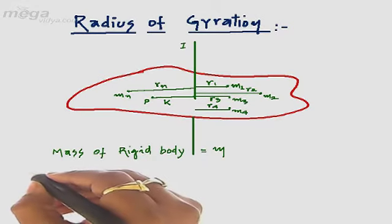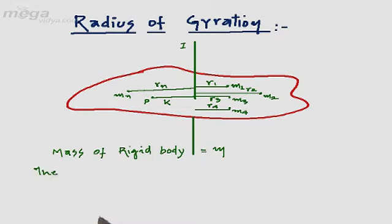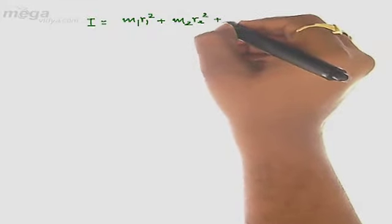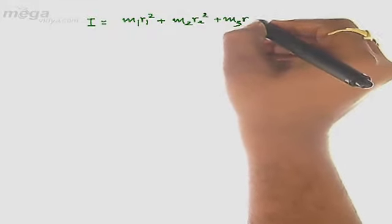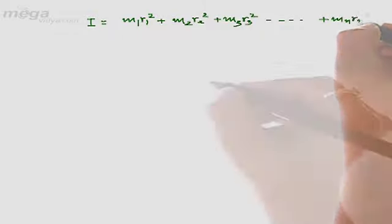We define the radius of gyration as the perpendicular distance of the center of mass of the rigid body from the axis of rotation. The moment of inertia I can be written as m1·r1² + m2·r2² + m3·r3², going on to mn·rn².